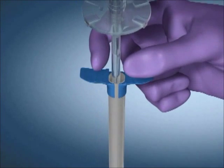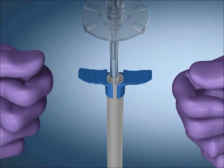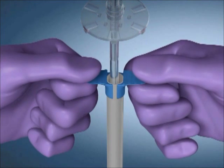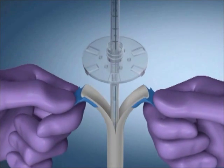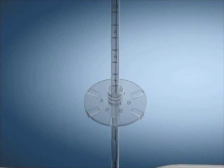Advance the distal end of the tube over the guide wire and into the stomach. After the tube has been advanced through the peel-away sheath and is in position in the stomach, peel the sheath away from the tube. Remove the guide wire.